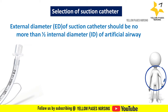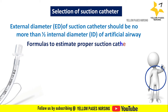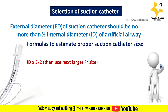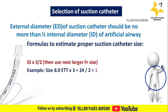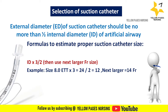Formula 1: internal diameter multiplied by 3, divided by 2 — then use the next larger French size. For example, if the ET tube internal diameter is 8: 8 × 3 = 24, divided by 2 = 12, so the next larger French size is 14. The suction catheter size will be 14 French.